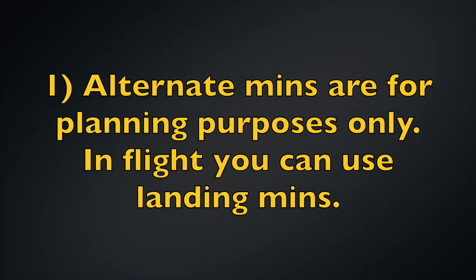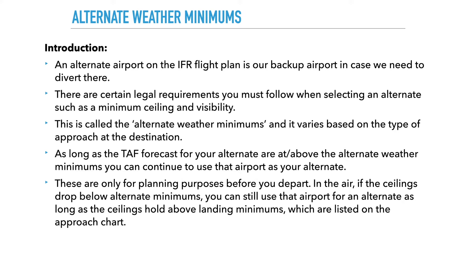It's very common for people to forget this important point: these alternate weather minimums are for planning purposes only. This is our plan B airport, so we need to make sure it's good, but only before we depart. But once you're in the air, and if the ceiling drops below your alternate planning minimums, you don't have to change your alternate. You can continue to use that airport as your alternate, as long as the ceilings hold above your landing minimums, which are listed on the approach chart.